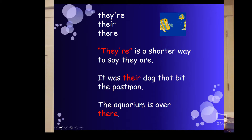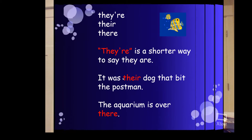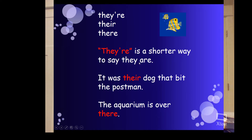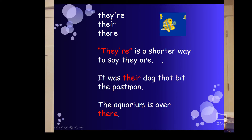Now this one is big — there, their, they're — probably one of the most confusing and most incorrectly used words. They're is a shorter way to say 'they are' — take out the A and you get they are. Their has that I, dealing with those people — 'their dog that bit the postman.' There indicates distance — 'The aquarium is over there.' So: there is distance, their deals with people/possession, and they're means they are.